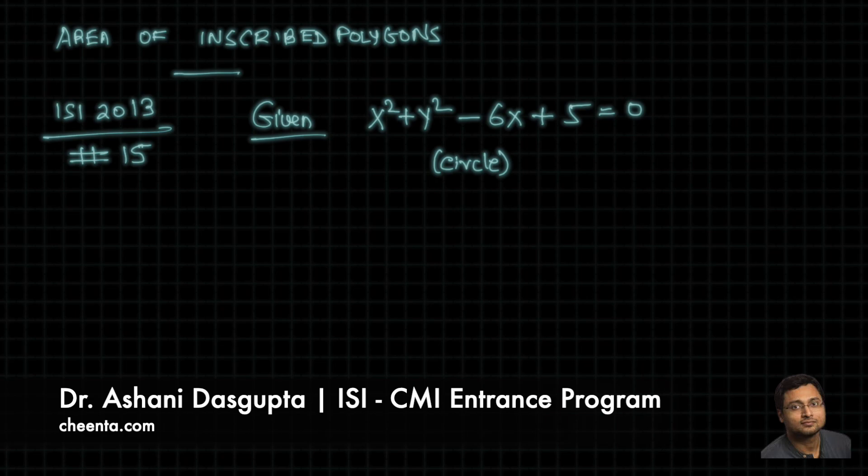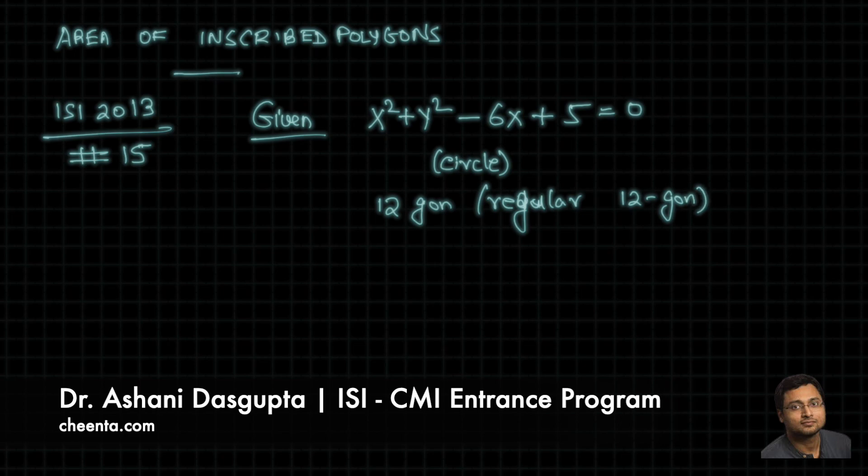There is a 12-gon, a regular 12-gon. Regular means all sides and angles are equal, a regular 12-sided polygon. It's inscribed in the circle.